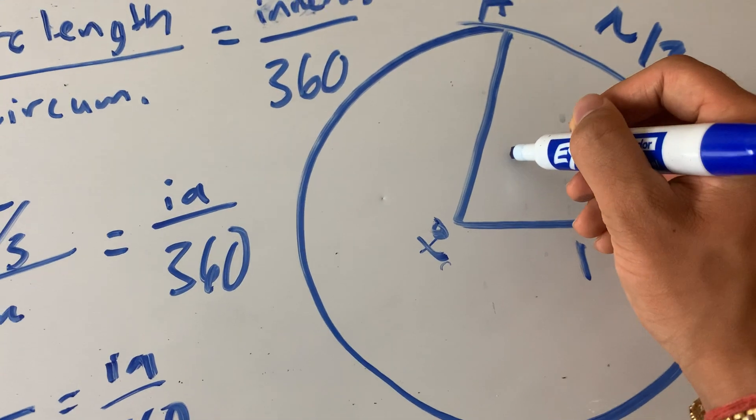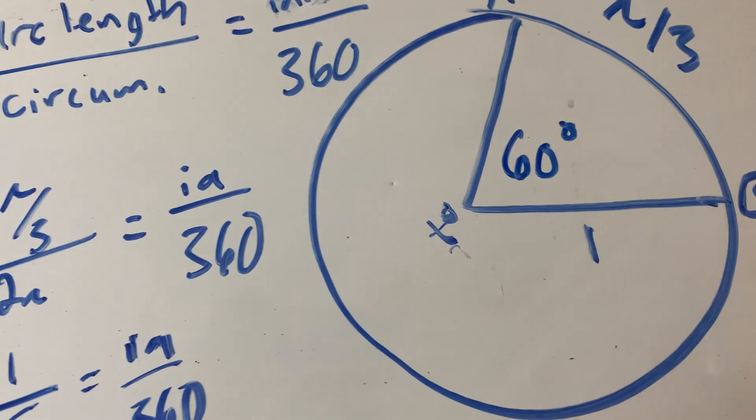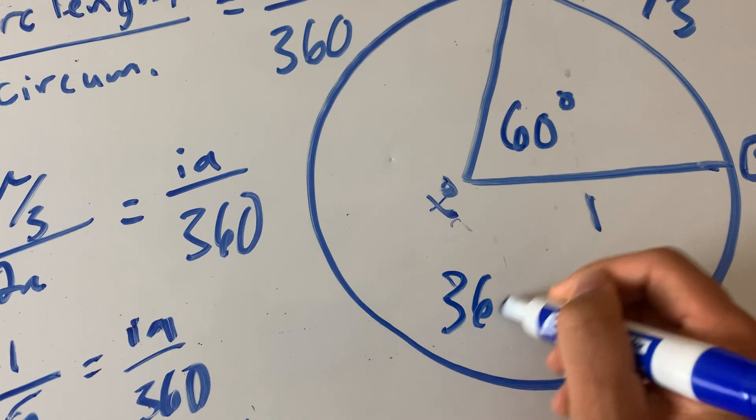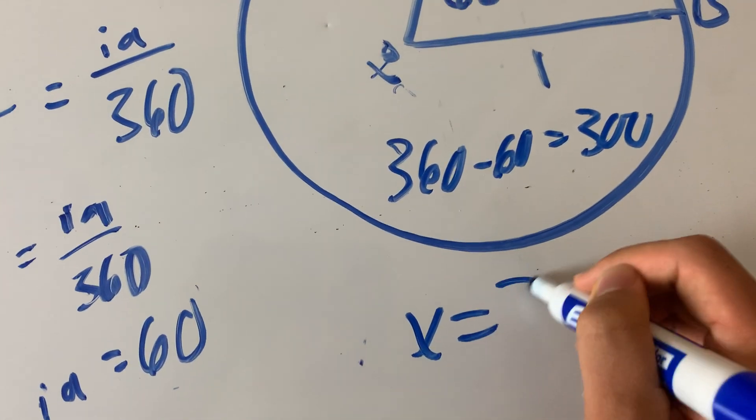This means this inner angle, guys, is 60 degrees. So what's the outside angle? Well, 360 minus 60. So 360 minus 60 equals 300. X equals 300. Problem solved.